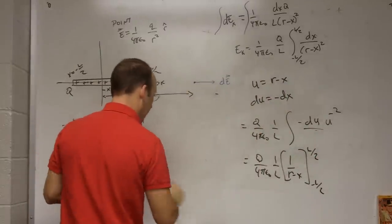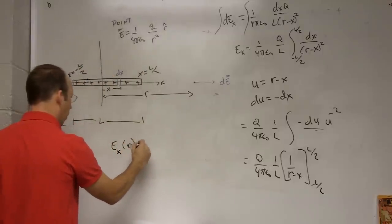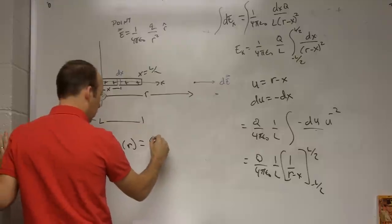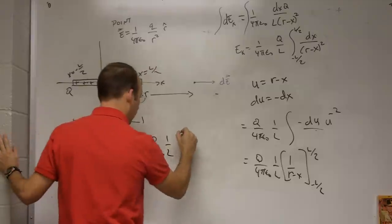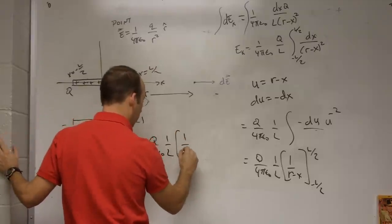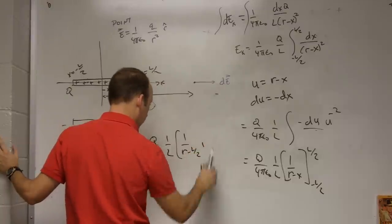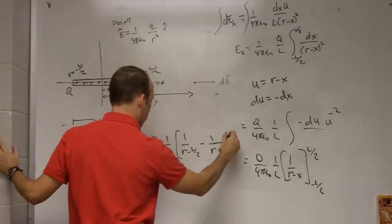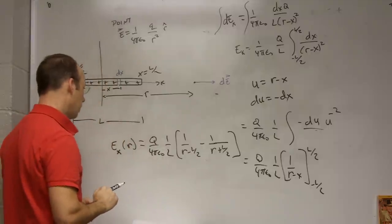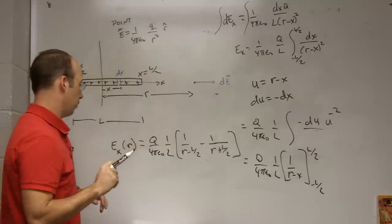Okay. So now we get EX, just the X component, as a function of R, it's going to be Q over 4 pi epsilon naught 1 over L, and then I get 1 over R minus L over 2 minus 1 over R plus L over 2. I can simplify the sum, but I'm going to stop, because I don't want this to go too long.